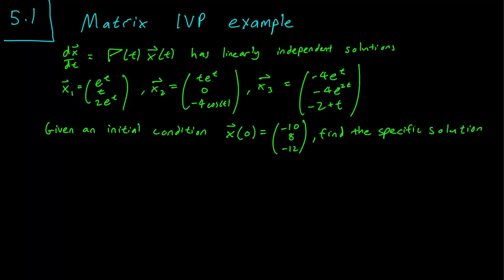Hello class, this is section 5.1 and we are going to work through a matrix initial value problem example. We have here our problem and it has linearly independent solutions x1, x2, x3, so a three by three matrix problem. We have given our three solutions, and we are asked to find the specific solution given this initial condition.